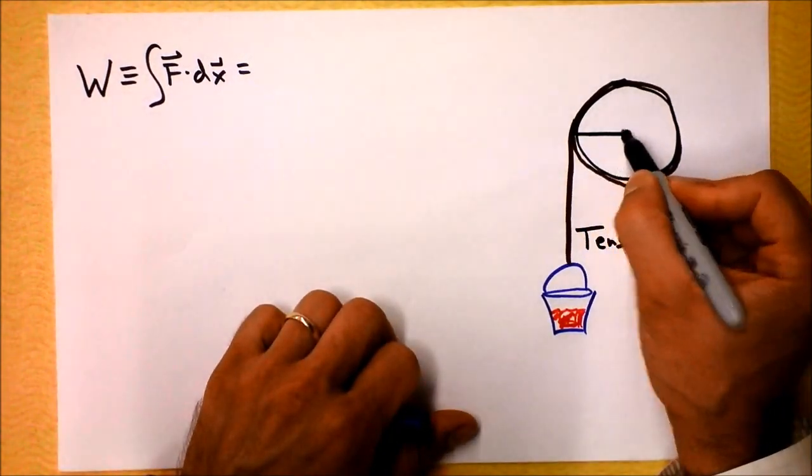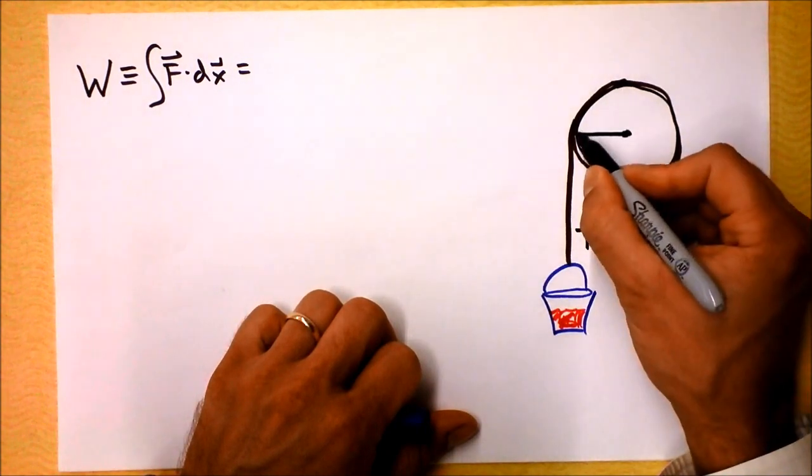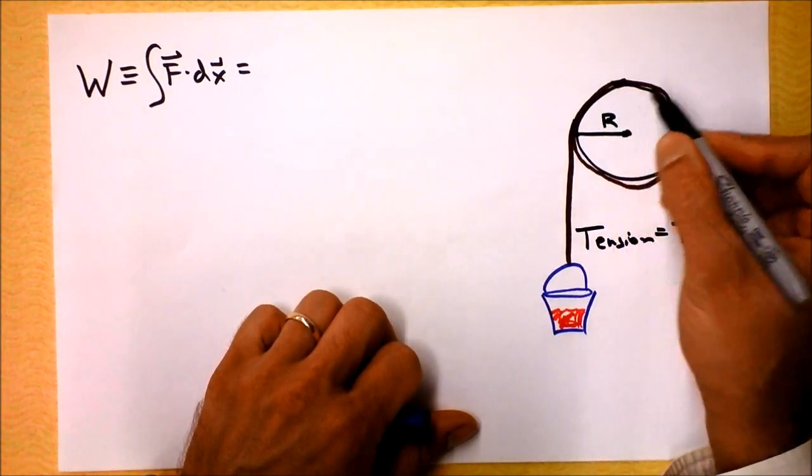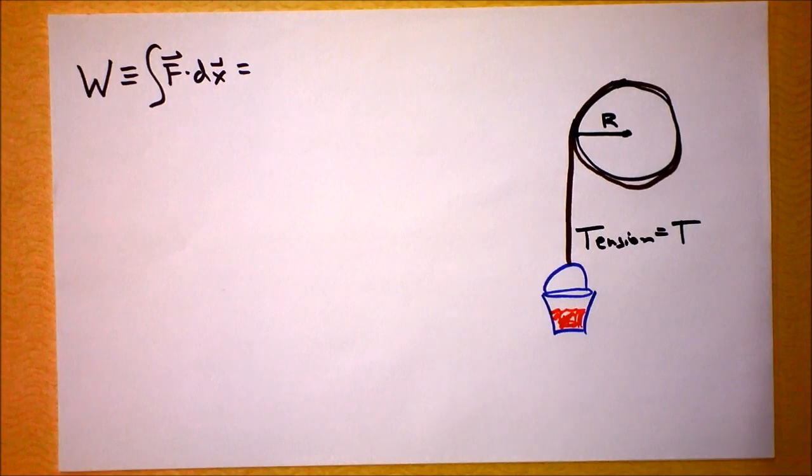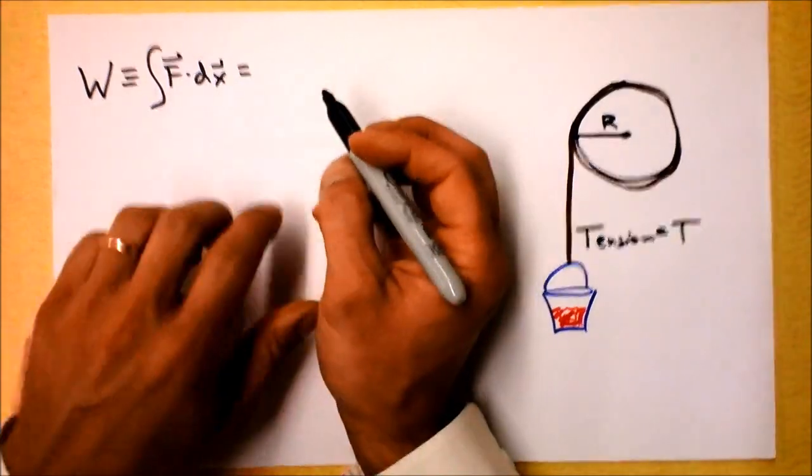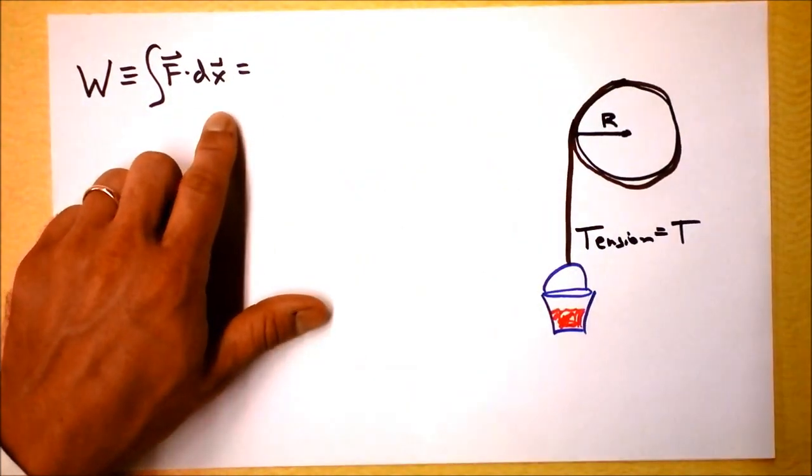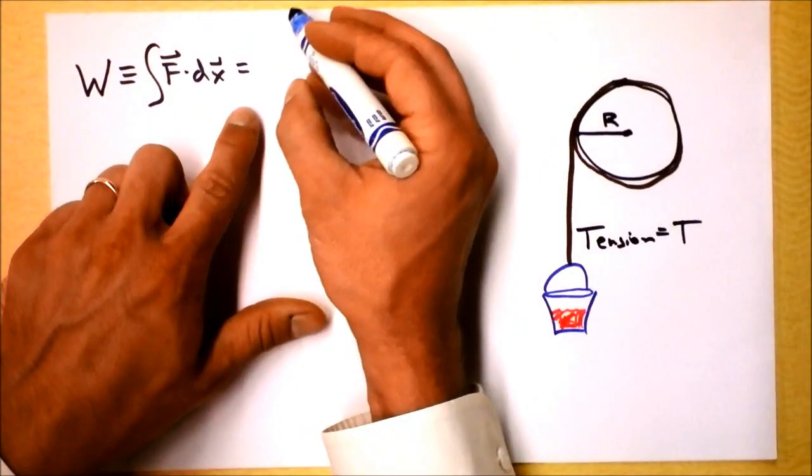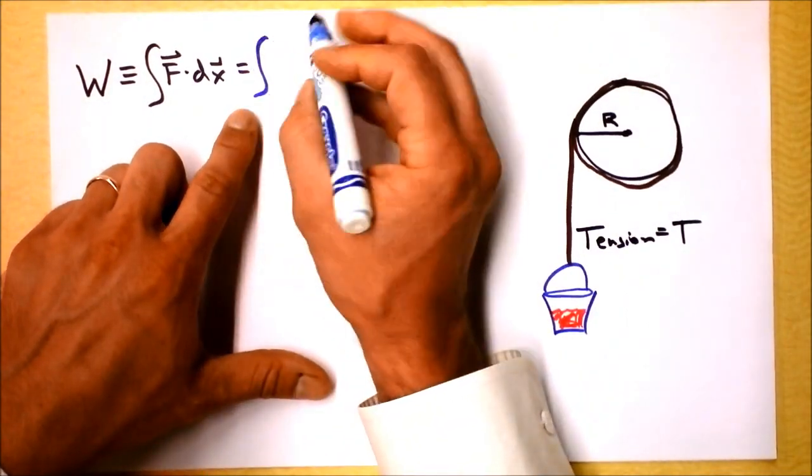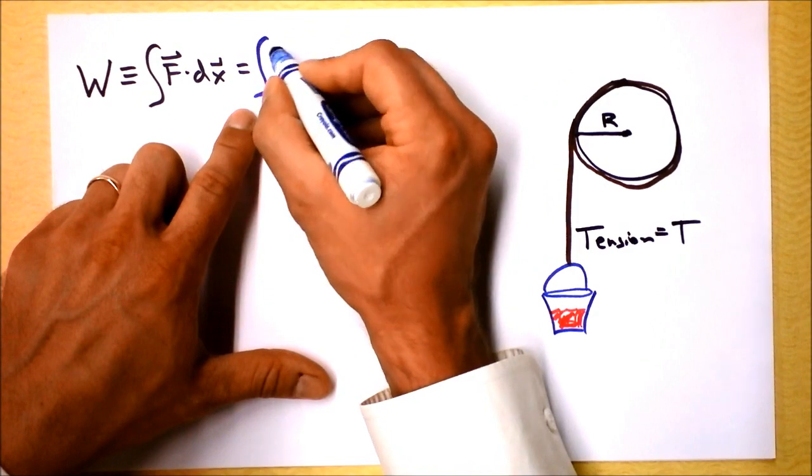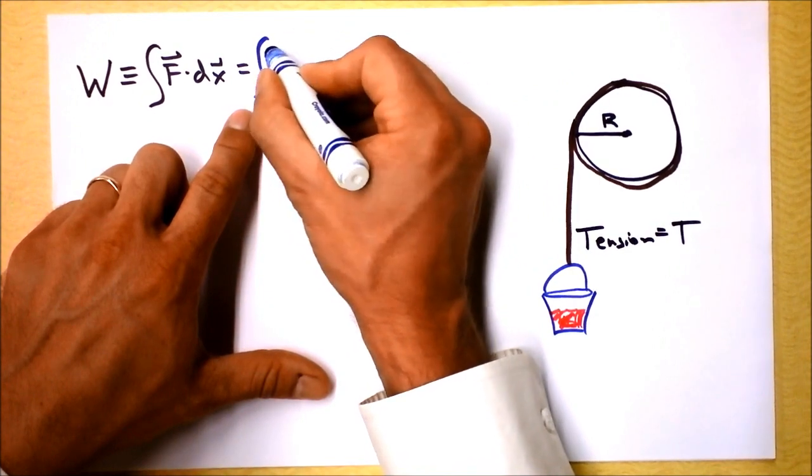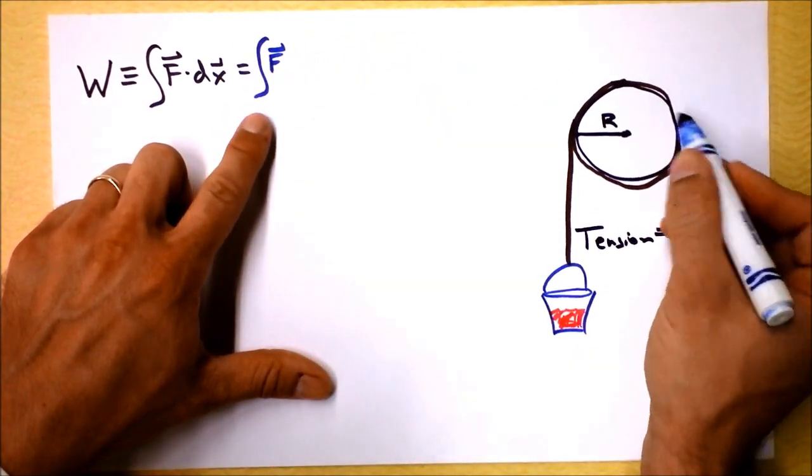Suffice it to say that there is some tension in the cable. I'm gonna call the tension T, and the radius of the pulley I'm gonna call capital R. So consider what's going on here in this equation.